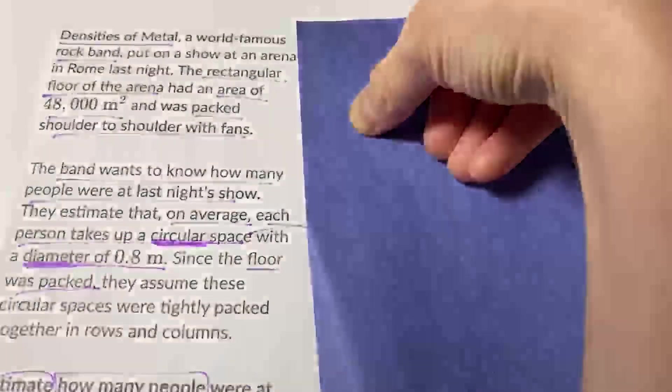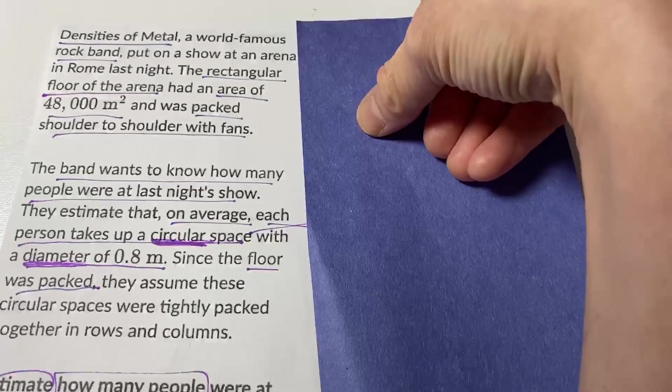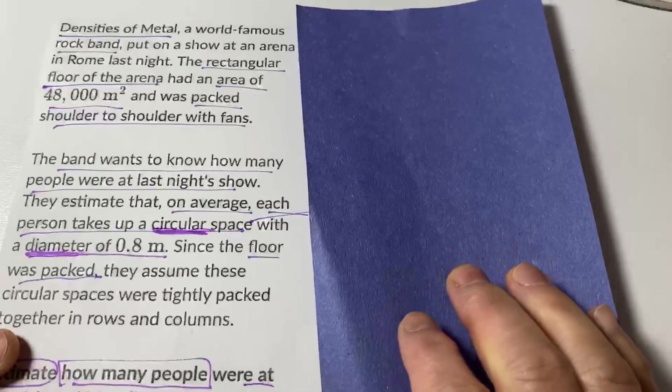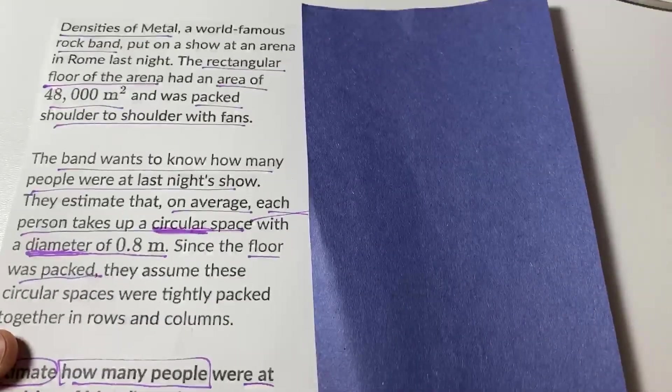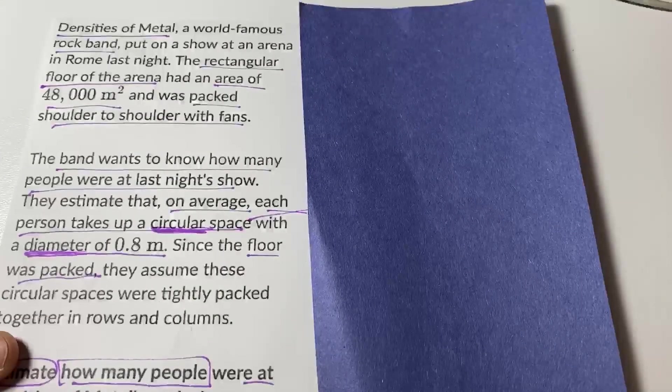Densities of Metal, a world-famous rock band, put on a show at an arena in Rome last night. The rectangular floor of the arena had an area of 48,000 square meters and was packed shoulder to shoulder with fans.